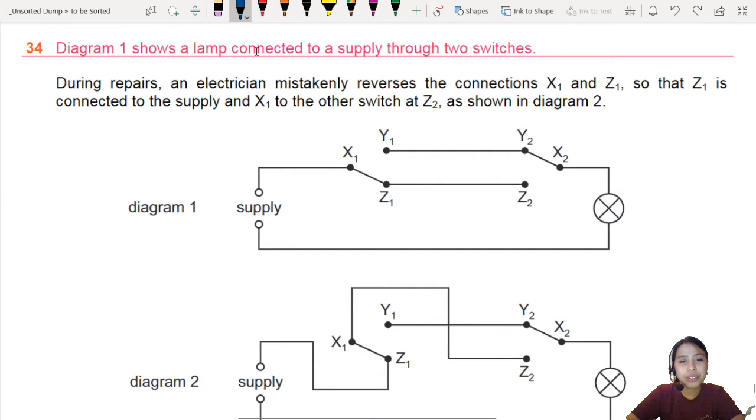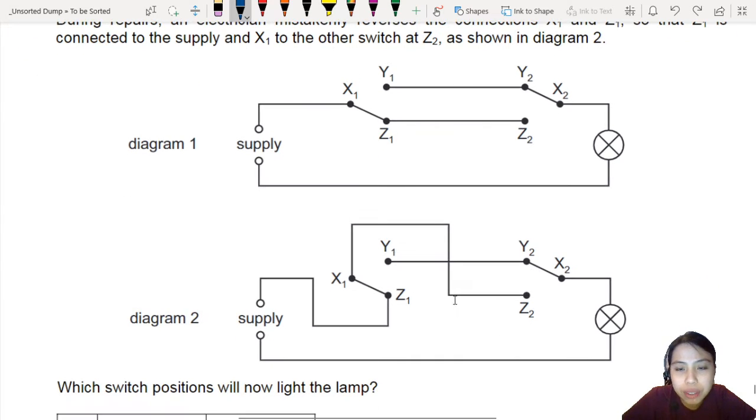In this question there are two circuits. The first one is what an electrician should have done. If you're a good electrician you should have done this wiring. But of course people make mistakes. So what the electrician accidentally did is reverse the connections down here and you get this messed up circuit and your light bulb does not light up anymore.